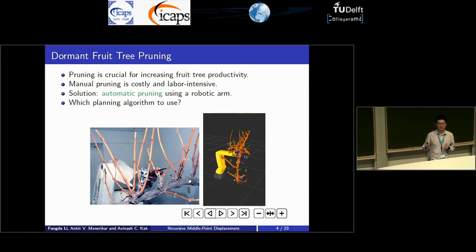The main motivation for our project is dormant fruit tree pruning. Pruning is a crucial process for fruit tree farmers to increase the yield of their orchard. As of now, the majority of it is done by human labor. It's very labor intensive and costly. Therefore, we would like to consider automating this process with a robotic arm. That's what's shown in the picture. Now our question of interest is, which planning algorithm to use for the robotic arm?